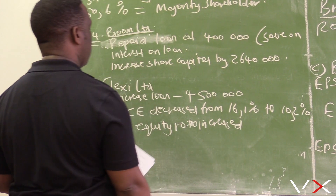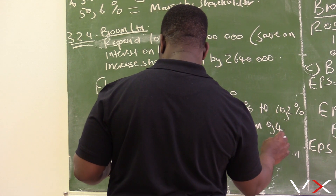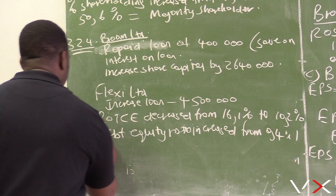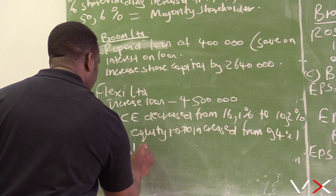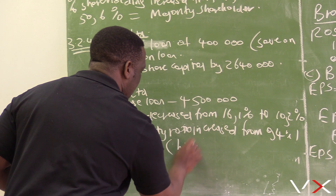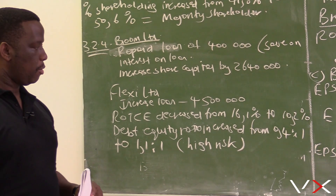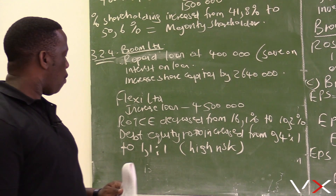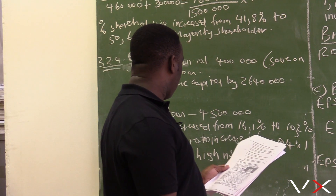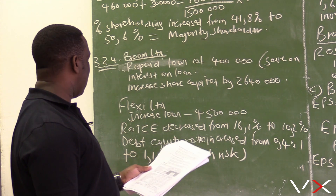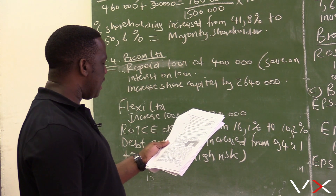The debt equity ratio increased from 0.4:1 to 1.1:1. The business is now at high risk — the loans are now too high. Looking at the return of 10.2 percent, it is less than the interest rate on the loan.